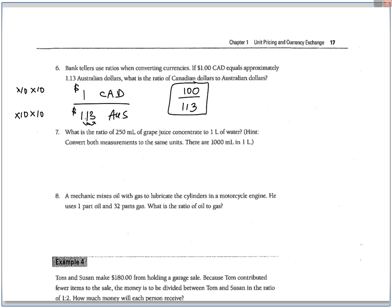If I put that in my calculator, 100 divided by 113, it's going to keep it at that. That is, in fact, the lowest terms ratio. So that's all you can do with that question.